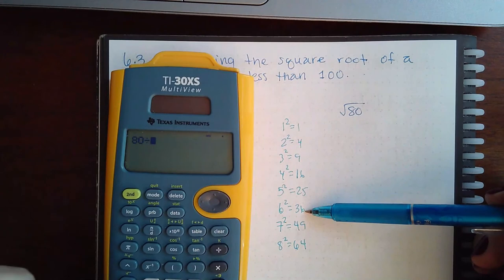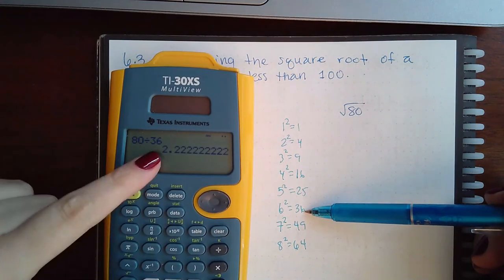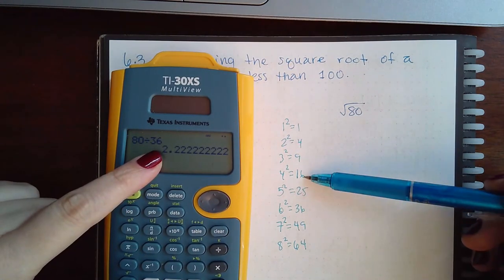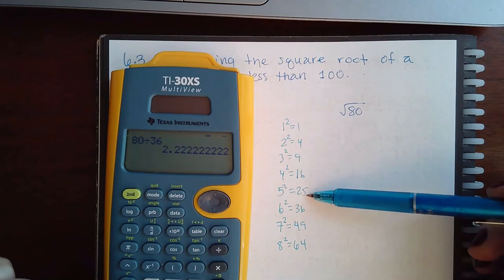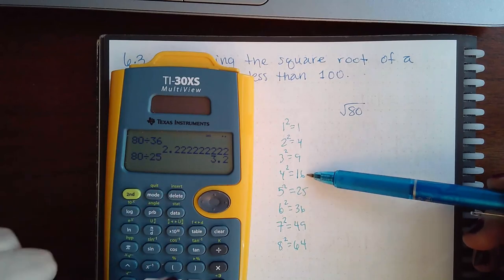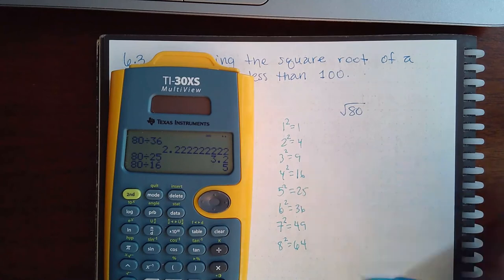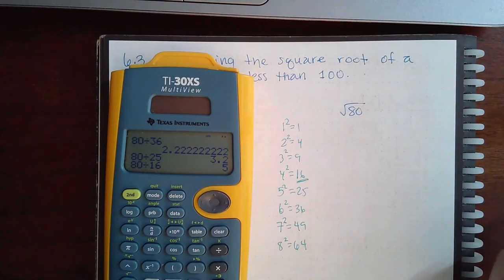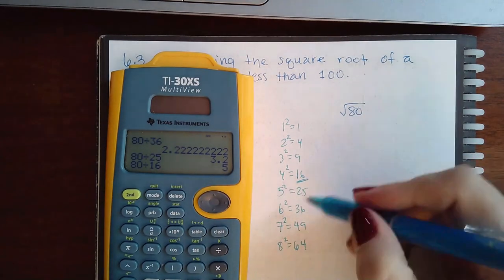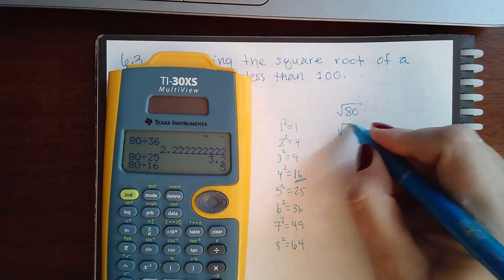I want to find the largest one that will go into 80 evenly. I don't think 36 will go into 80. Let's see: 80 divided by 36, no it does not go in evenly. 25 won't either. Let's see, 80 divided by 16, yes.